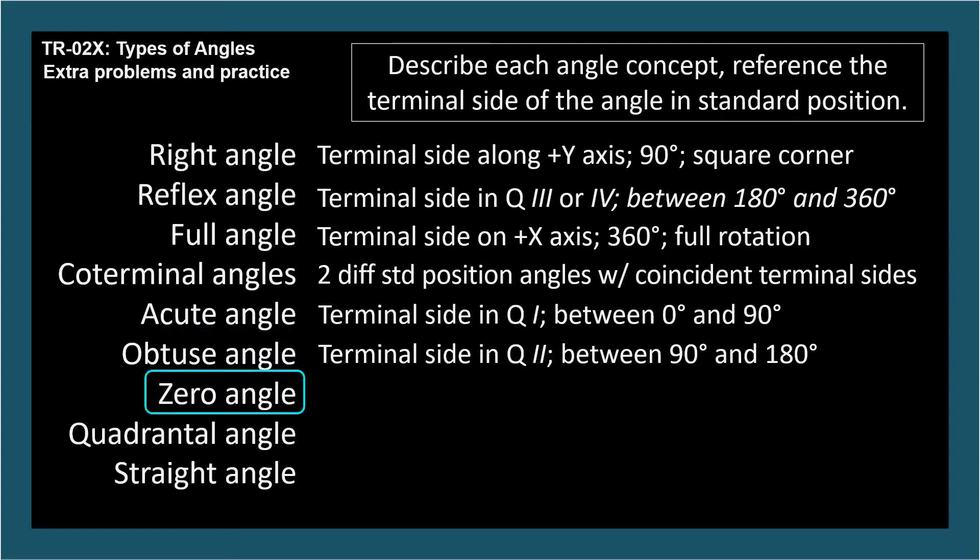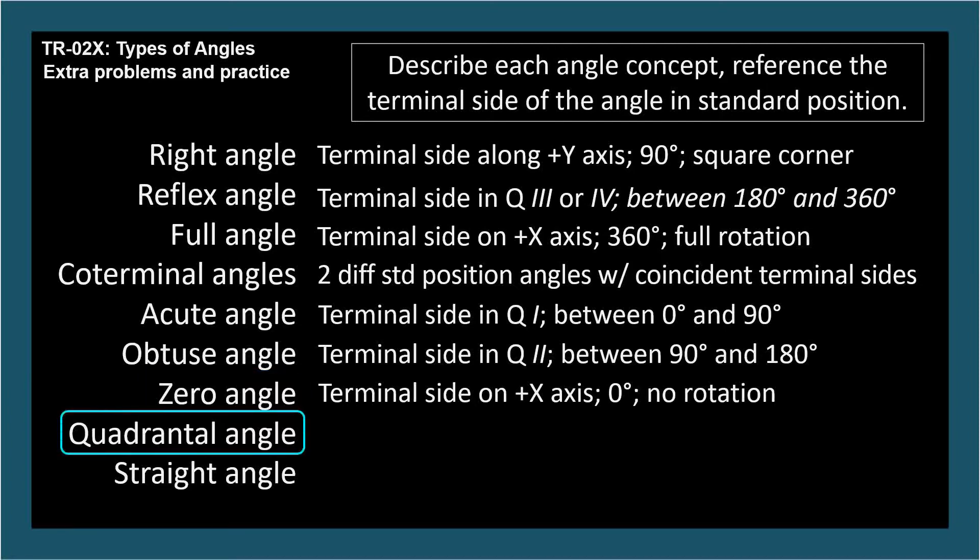Zero Angle: The terminal side is along the positive x axis, 0 degrees, no rotation. Quadrantal Angle: The terminal side is on any positive or negative axis, 0 degrees, 90, 180, 270, or 360 degrees, or any angle coterminal with these.